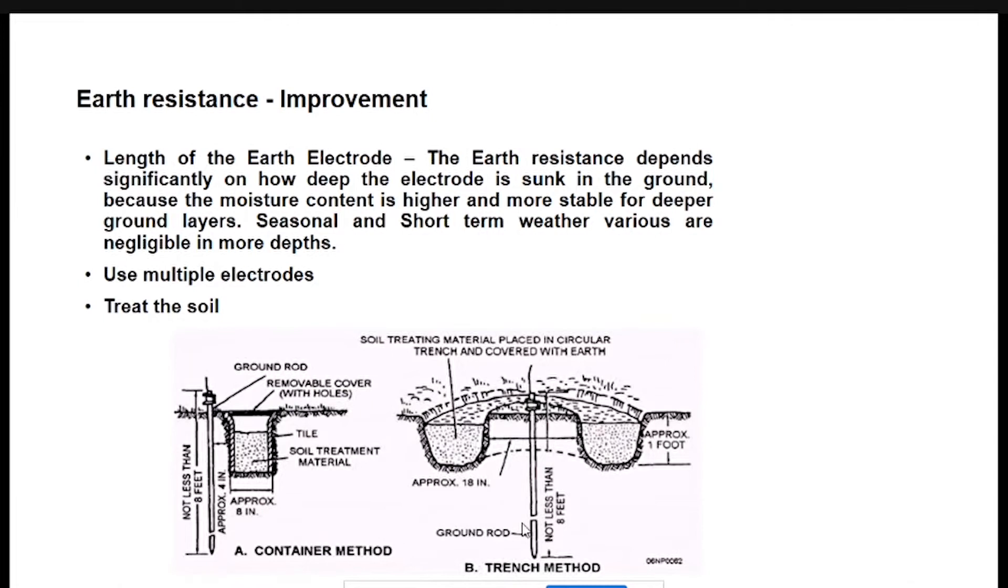Salt and charcoal should not be provided along with the electrode because the electrolyte of the salt and charcoal is sufficient for the electrode to activate. If you put the salt and charcoal directly to the electrode, it will eat away the electrode, so the efficiency of the earth resistance will be totally affected.